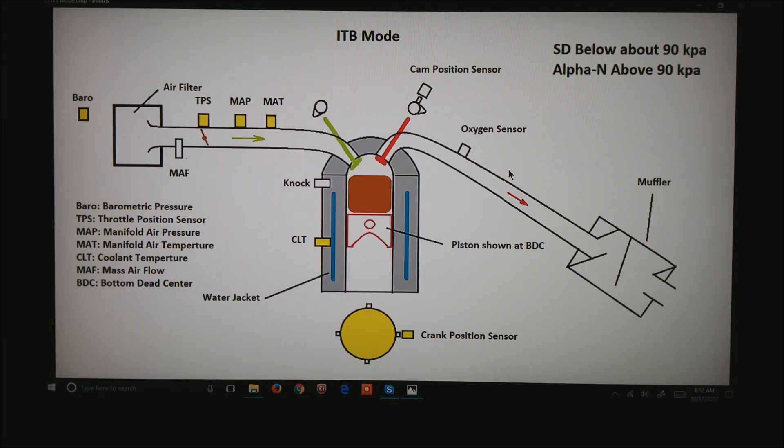Same with the manifold air pressure, and any time that we're in theory above about 90 kPa, we will go into alpha n mode. Below 90 kPa, most of your driving around the street, is done in speed density.